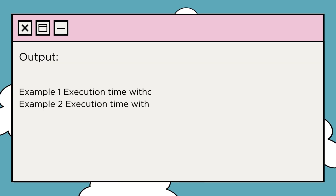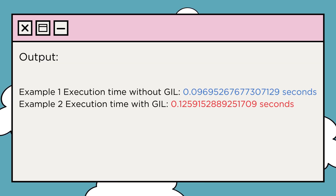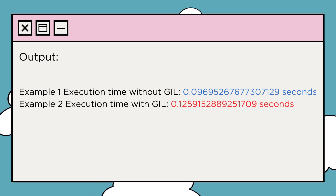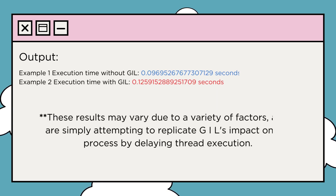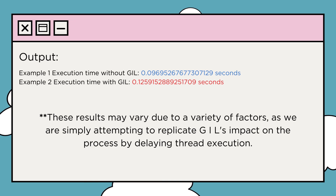After running the whole script, you can see the results flashing on the screen. Example 2 takes a bit longer. This waiting game is all thanks to our friend the Global Interpreter Lock — it's saying only one task at a time is allowed. Keep in mind that these results may vary due to a variety of factors, as we are simply attempting to replicate the GIL's impact on the process by delaying thread execution.